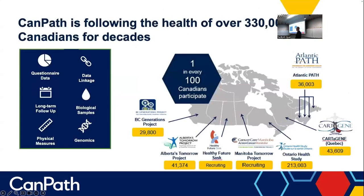CANPATH currently has around 350,000 participants — Manitoba and Saskatchewan are our most recent additions. The lion's share comes from Ontario, from the Ontario Health Study, which we lead out of the OICR. Two of the three projects you'll hear about today are largely coming from biologics and data from the Ontario Health Study. We capture information through questionnaires, and we invite people to an assessment centre where we may get a blood sample, measure blood sugars, take blood pressure, and so on — that falls under physical measures.